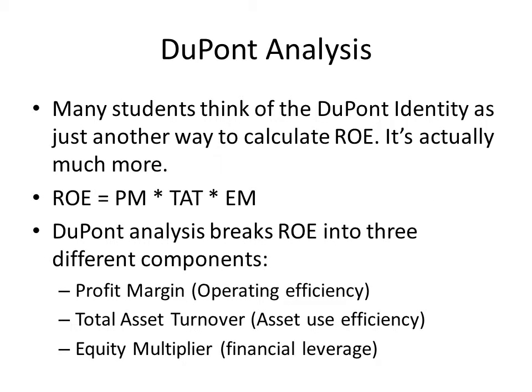Many students think of the DuPont identity as just another way to calculate ROE, but it's actually much more. It is profit margin times total asset turnover times the equity multiplier. What the DuPont analysis is really doing is breaking down return on equity into three different components: profit margin is a measure of operating efficiency, total asset turnover is a measure of asset use efficiency, and the equity multiplier is a measure of financial leverage.